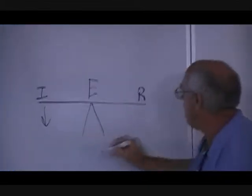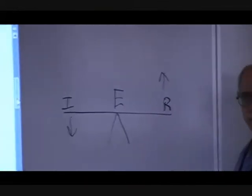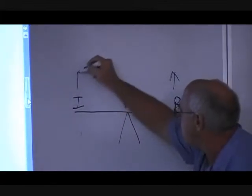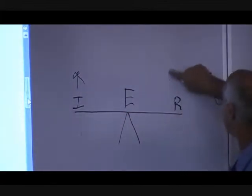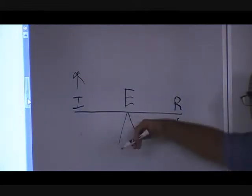But think of it this way: if this one goes down, this one's got to go up in order for the E to stay the same, and vice versa. If I goes up, then that means that R has gone down. So think of it as a seesaw there.